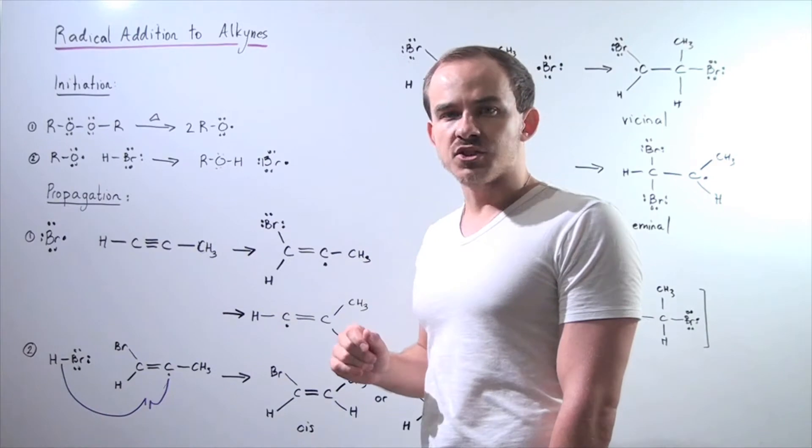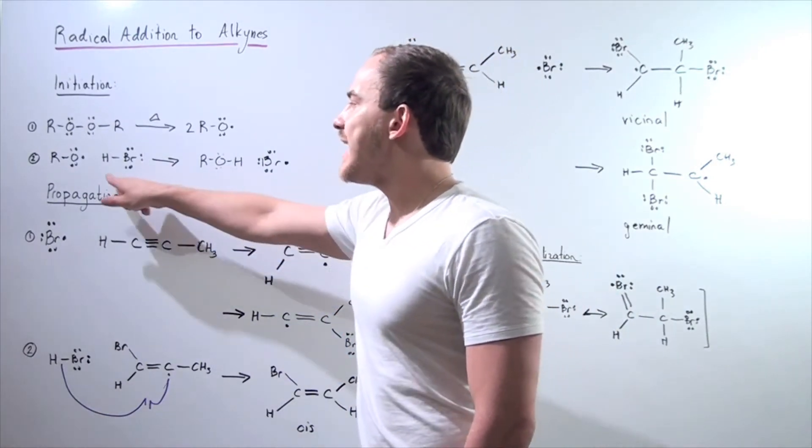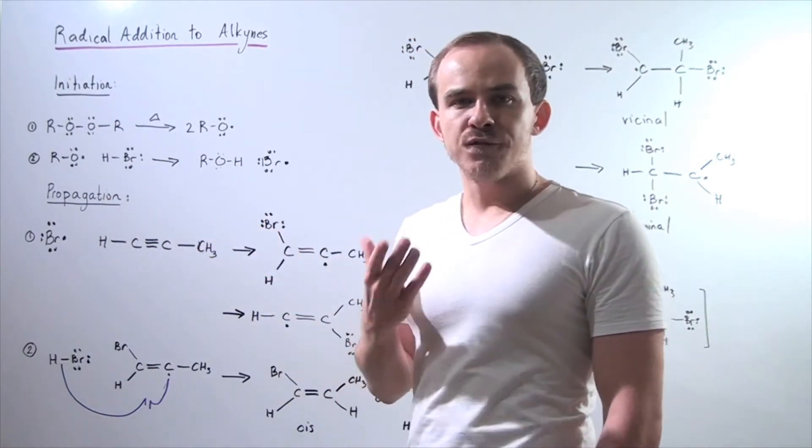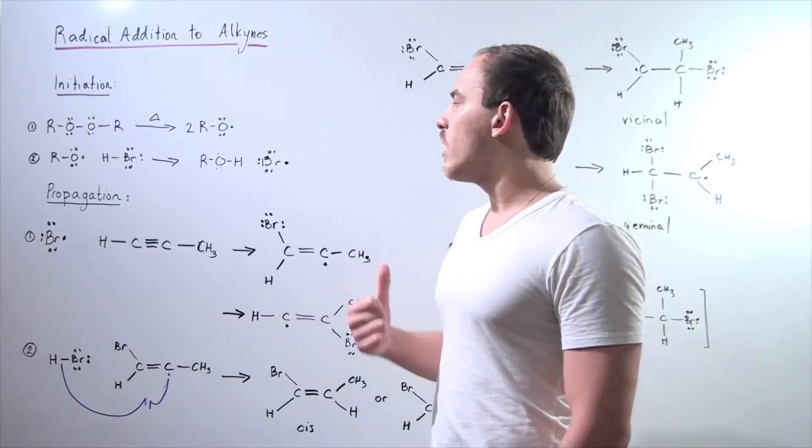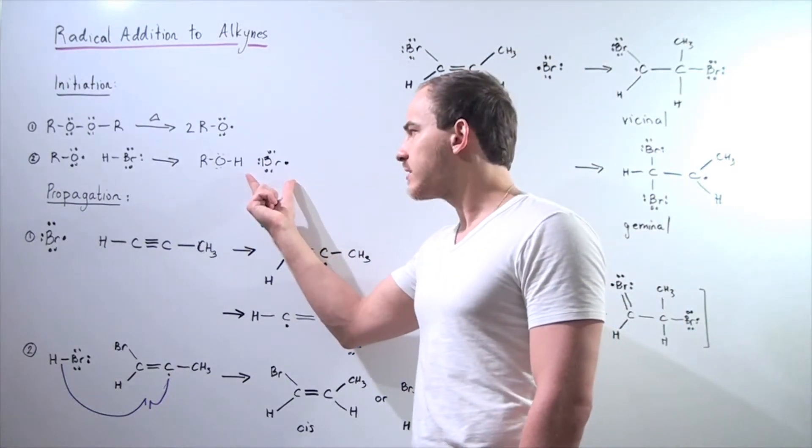We use one of these radicals and react it with an HBr molecule to form an alcohol as well as our chain-carrying bromide radical.